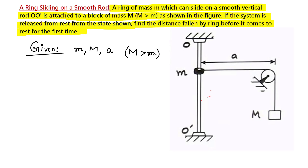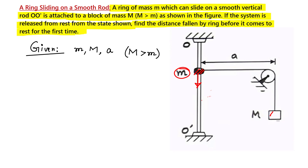Now let us visualize this problem. If mass M is larger, there will be a force in the downward direction Mg. You might wonder: if M is larger than the ring mass m, why would the ring go in the downward direction? The reason is the forces acting on the ring — tension T and gravity mg — where mg causes the ring to fall downward.